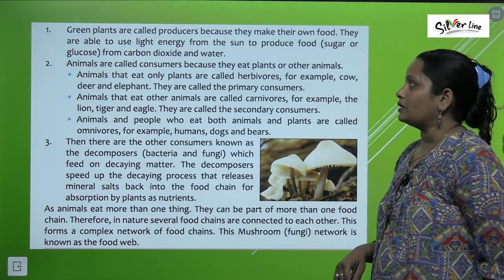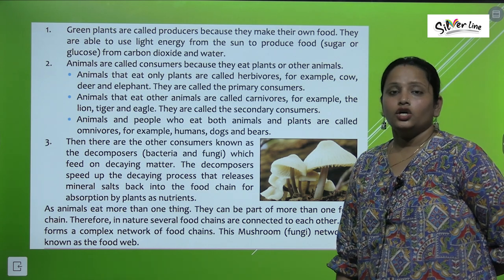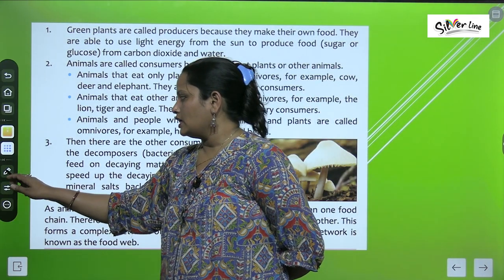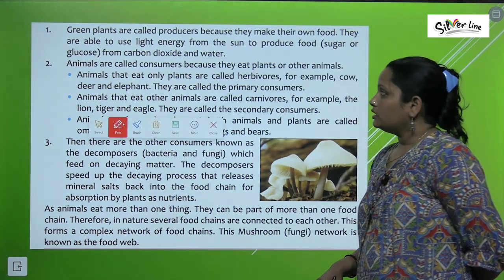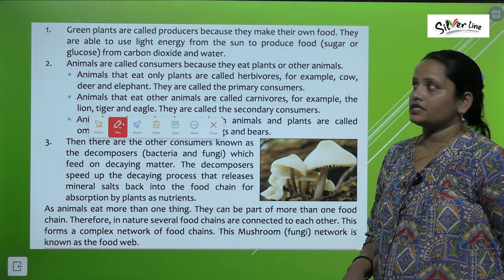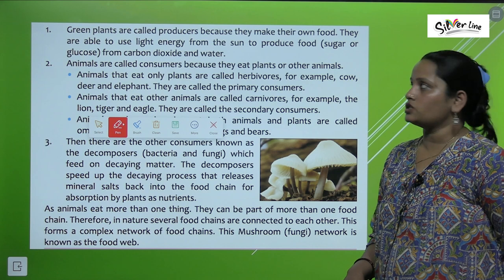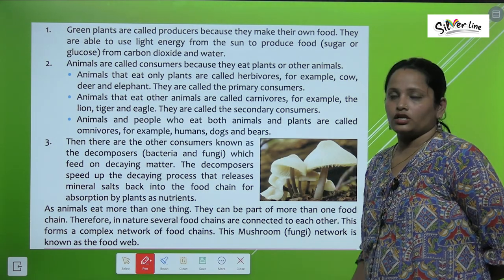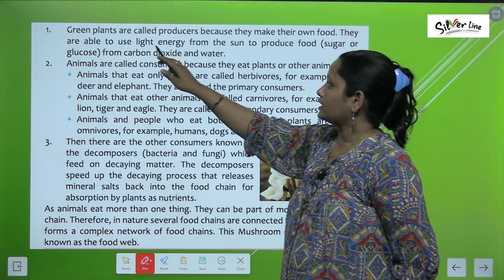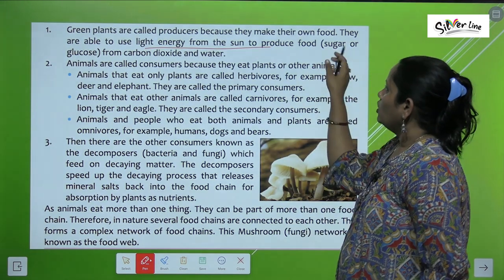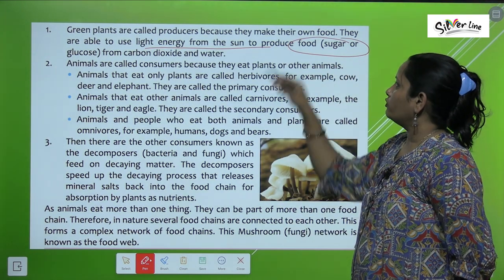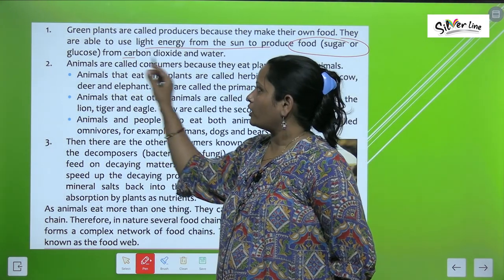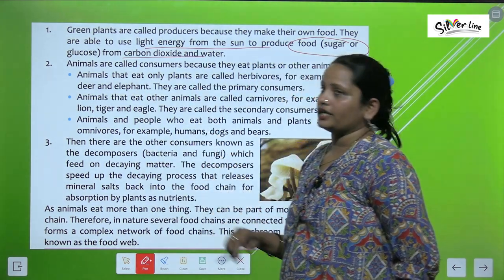Green plants are called producers because they make their own food. They are able to use light energy from the sun to produce food — making sugar or glucose from carbon dioxide and water.